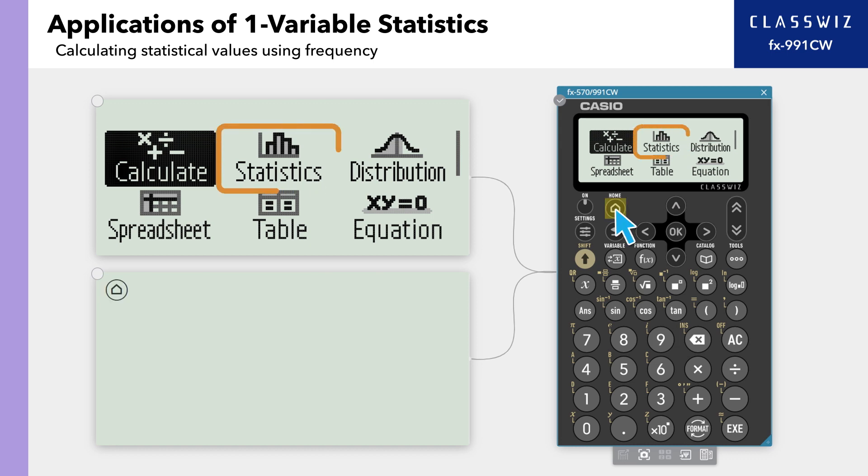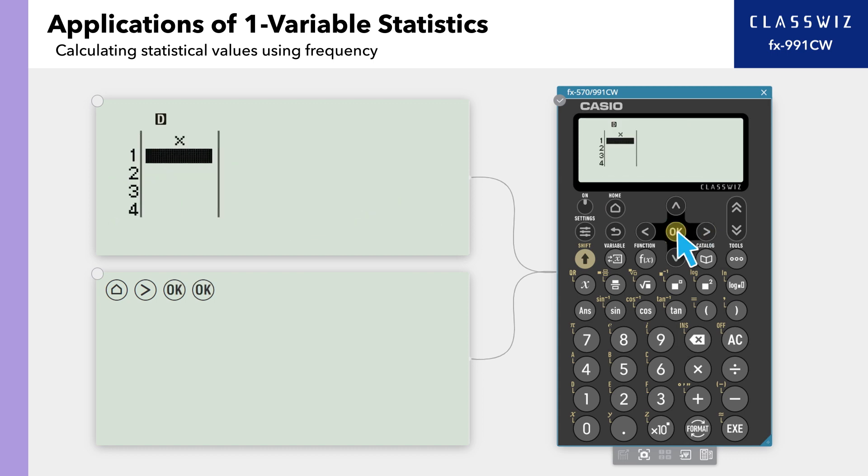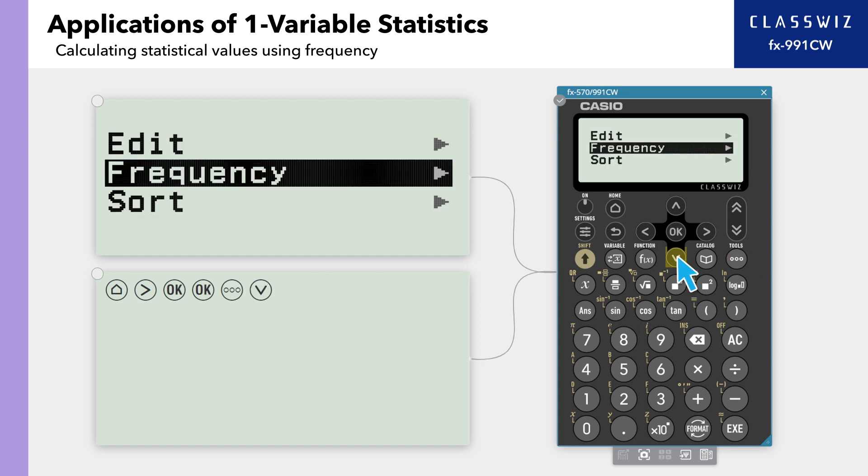Press Home and go to Statistics. Select one variable. Press Tools, select Frequency, and select On.